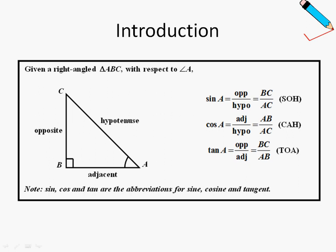So here's the introduction slide. What I want to point out here is the basic definition of sine, cosine, and tangent, which you have learned previously in your E-Math syllabus. The sine of angle A is defined as opposite over hypotenuse. The cosine of angle A is defined as adjacent over hypotenuse. And the tangent of angle A is defined as opposite over adjacent.